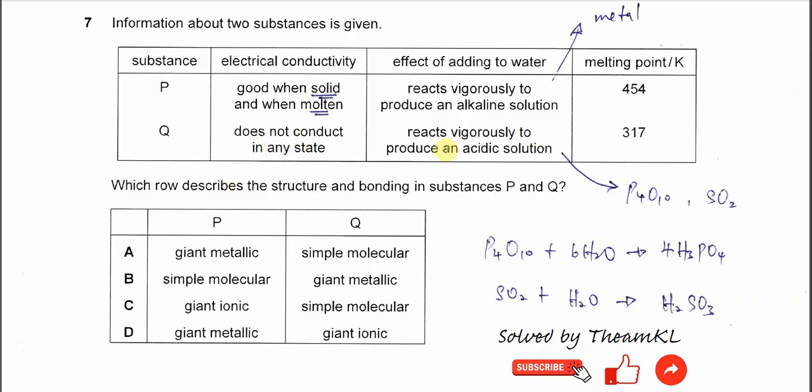Reacts vigorously to produce acidic solution. This is telling us it's a simple structure, not a giant. The giant covalent compound or giant molecular compound will not easily react with water like diamond or graphite. They won't really react with water.